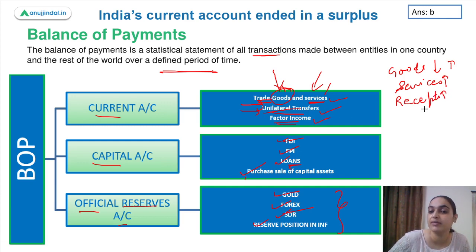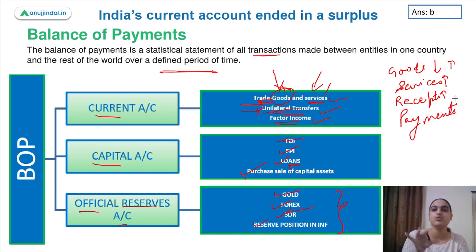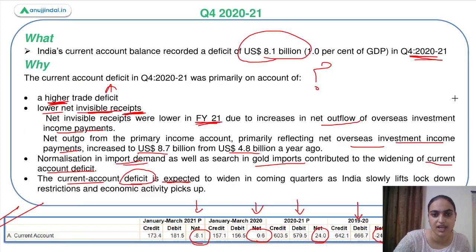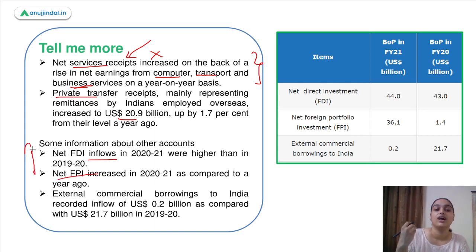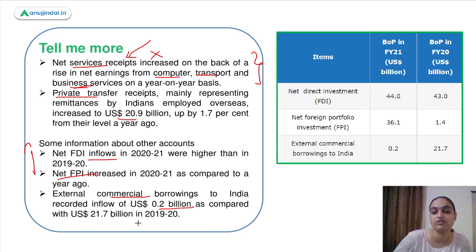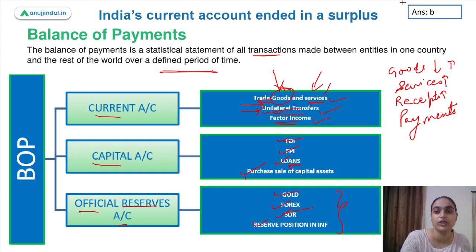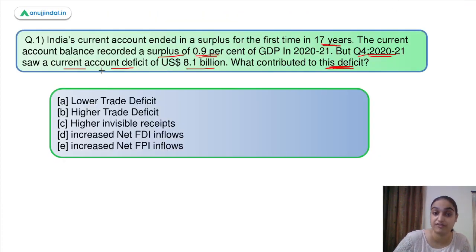So looking at all four components of the current account — goods export/import, services export/import, unilateral transfers, and factor income — we can identify why there was a surplus for the year or a deficit in the quarter. FDI inflows and FPI both increased, and we recorded the highest levels of these flows. External commercial borrowings reduced compared to the previous year. Coming back to the question, the answer is: higher trade deficit has been the major reason for the deficit in the fourth quarter.